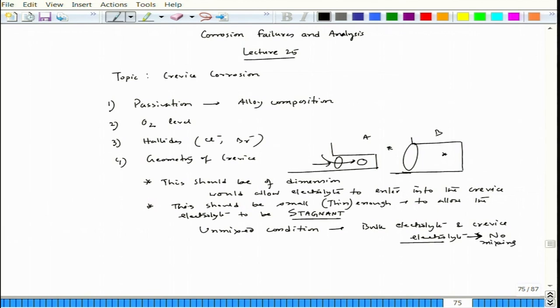There could be migration of ions, but that ion migration is much more sluggish compared to a situation where the crevice orifice is much larger, in which case there could be convection of the liquid. That convection must be avoided in order to have a crevice-type attack.